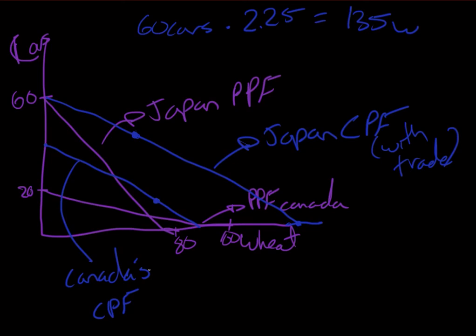So the example I just used with specialization and trade with this 1 to 2.25 wheat ratio is represented here. And this would have been my end points for Canada and Japan. So we can see that our consumption possibilities are better with trade. Trade has its advantages indeed.